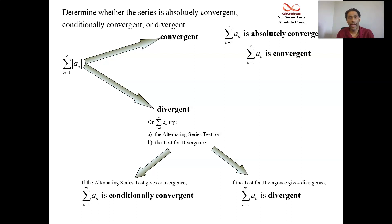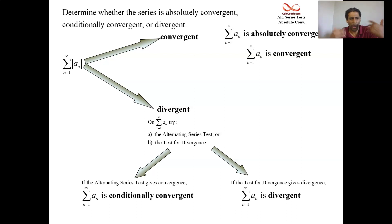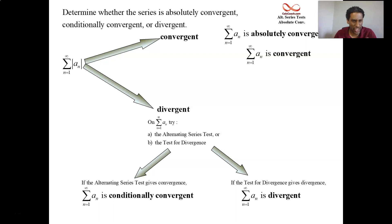If you try to use a test like the ratio test or the root test that have absolute values already baked into them, and you want to use that on the original series, there is no chance for conditional convergence. The only two options are absolute convergence or divergence. That's why when we had the ratio and root test, I put the term absolute convergence in front of it, because there is no such thing as conditional convergence when you work with those two tests.